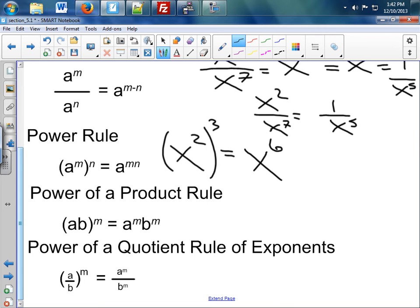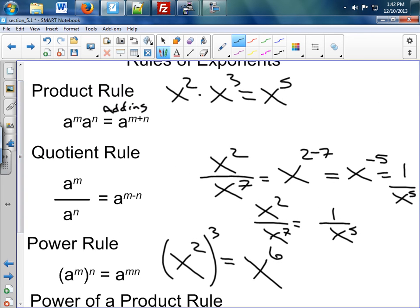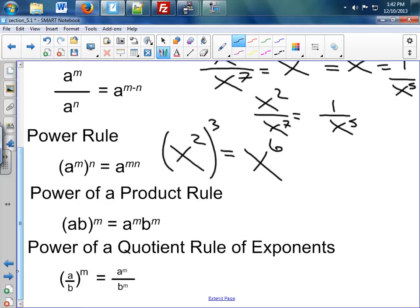Please notice the difference between the Power Rule and the Product Rule. Here we are multiplying them. Here we're raising them to a power. These are the ones that everyone messes up. If you're raising to a power, you multiply. If you're just multiplying the exponents, you just add them.